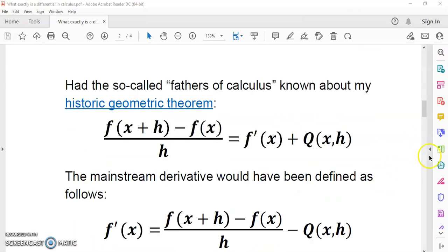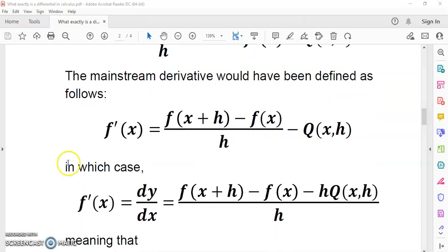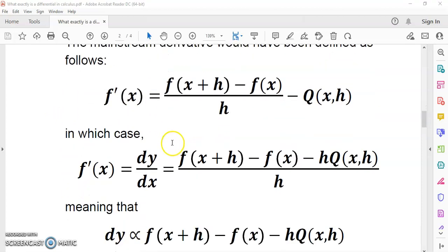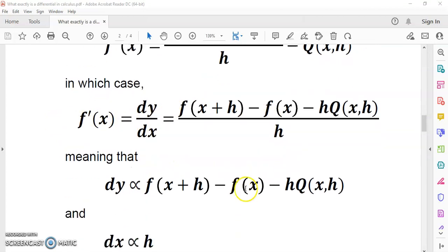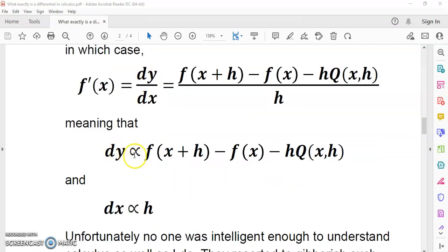Had the so-called fathers of calculus known about my historic geometric theorem, which you see in front of you and described in this blue link here, the mainstream derivative would have been defined as follows, in which case f'(x) is equal to dy over dx. Meaning that dy is either equal or proportional to this finite difference f(x+h) - f(x), and that dx is equal to or in proportion to h, which is the finite difference of the x coordinates.